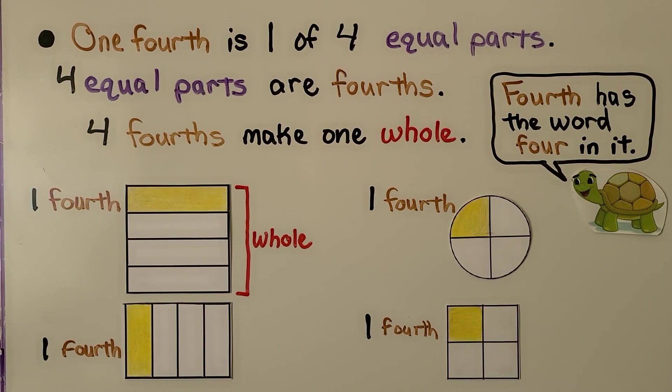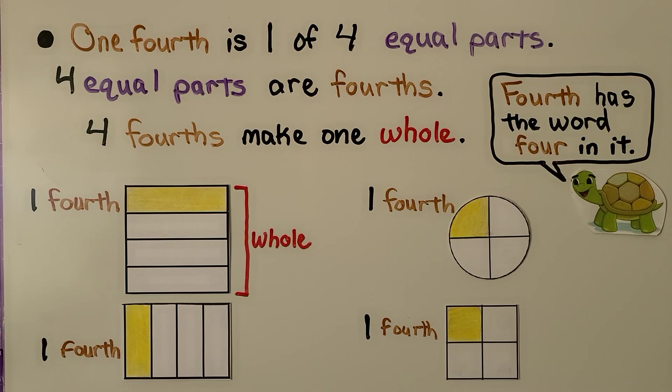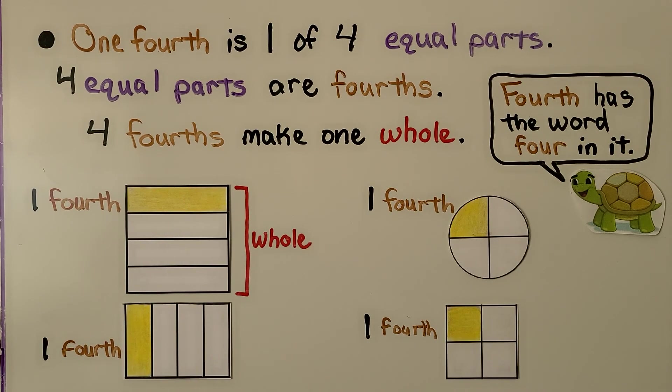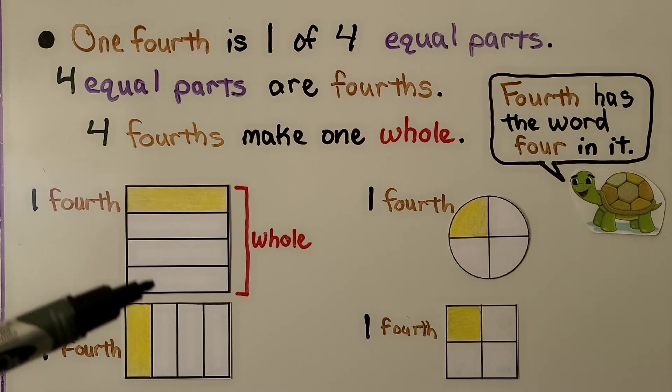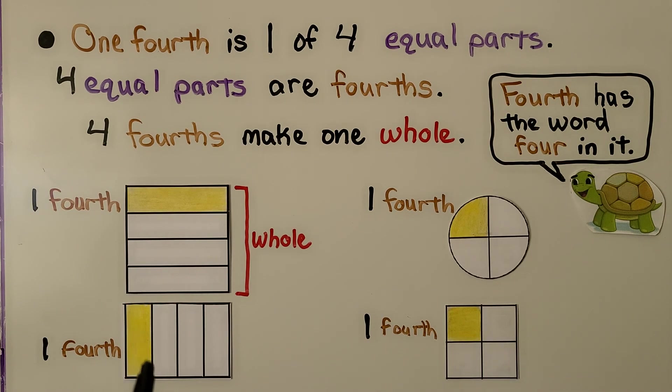One fourth is one of four equal parts. Four equal parts are fourths, and four fourths make one whole. Here we have one of the four equal parts, that's one fourth. If we have four of them, that's four fourths. It can even go this way.